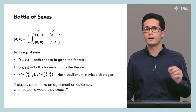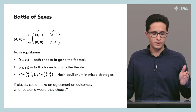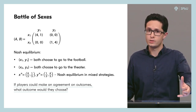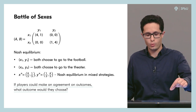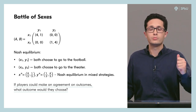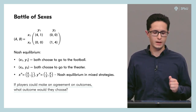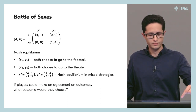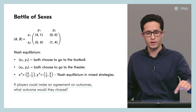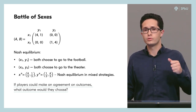This problem can be modeled using a bimatrix game shown on the slide. The first player is the husband and the second player is the wife. The husband has two pure strategies x1 and x2, and the wife also has two pure strategies y1 and y2. Here x1 is when the husband chooses to go to the football match, and x2 is when the husband chooses to go to the theater. The same is true for the wife. Consider the strategy profile x1, y1: the payoffs are four and one, so the husband receives a payoff of four and the wife receives a payoff of one if both choose to go to the football match.